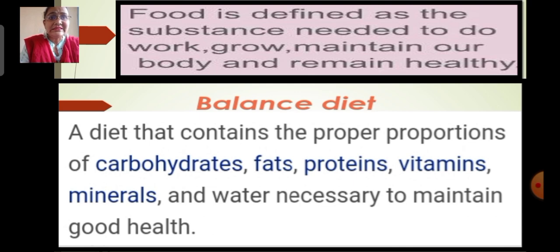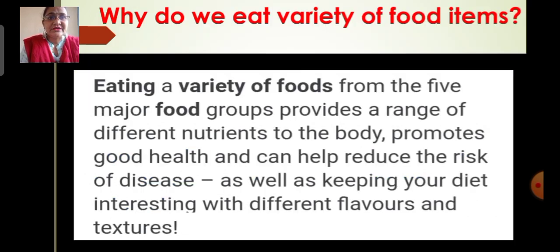Then we studied about balanced diet — a diet that contains the proper proportions of carbohydrates, fats, proteins, vitamins, minerals and water necessary to maintain good health. We also studied about why we eat a variety of food items. Eating a variety of food items from 5 major food groups provides a range of different nutrients to the body, promotes good health, helps reduce the risk of diseases, and keeps your diet interesting with different flavors and textures.